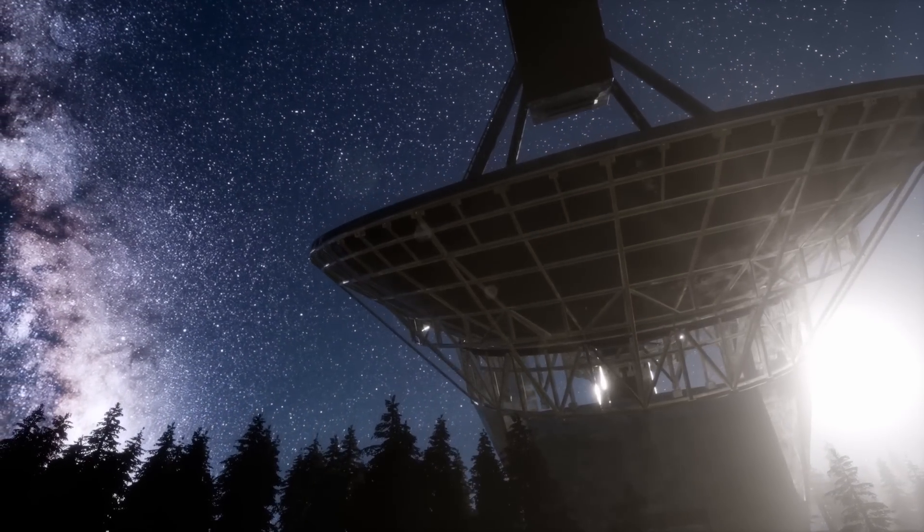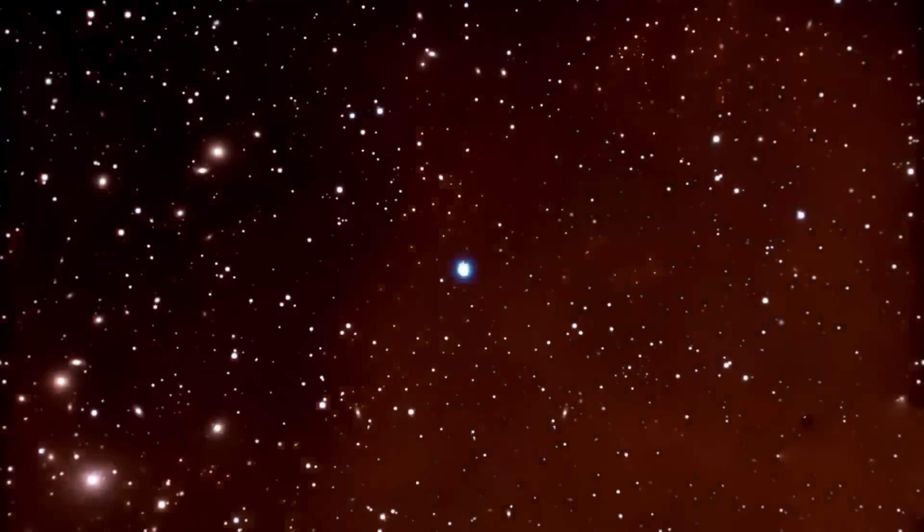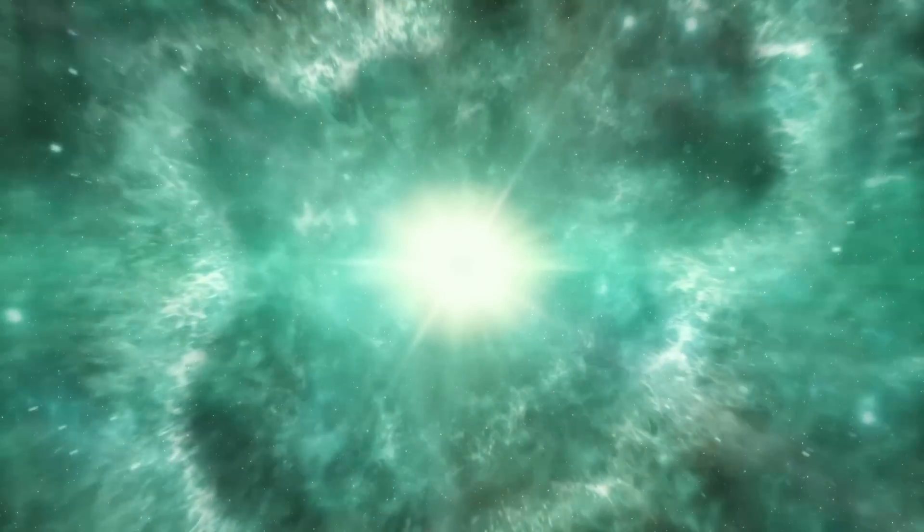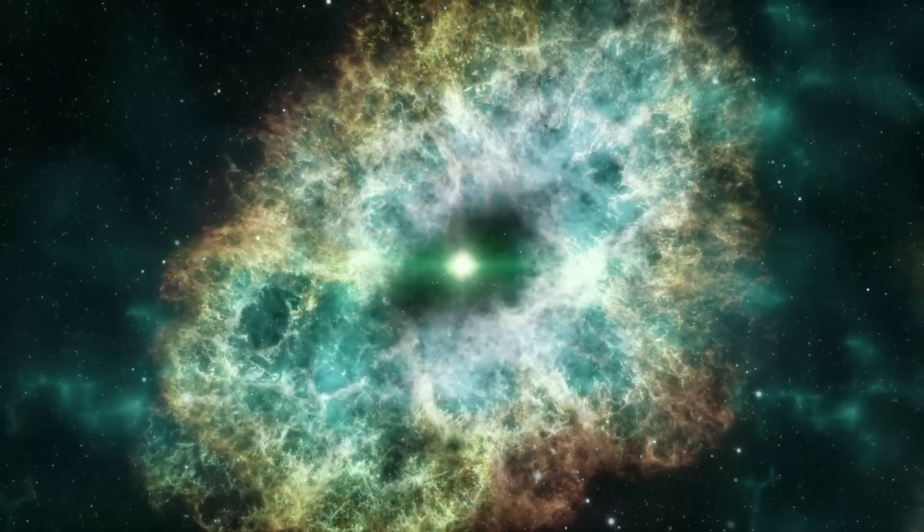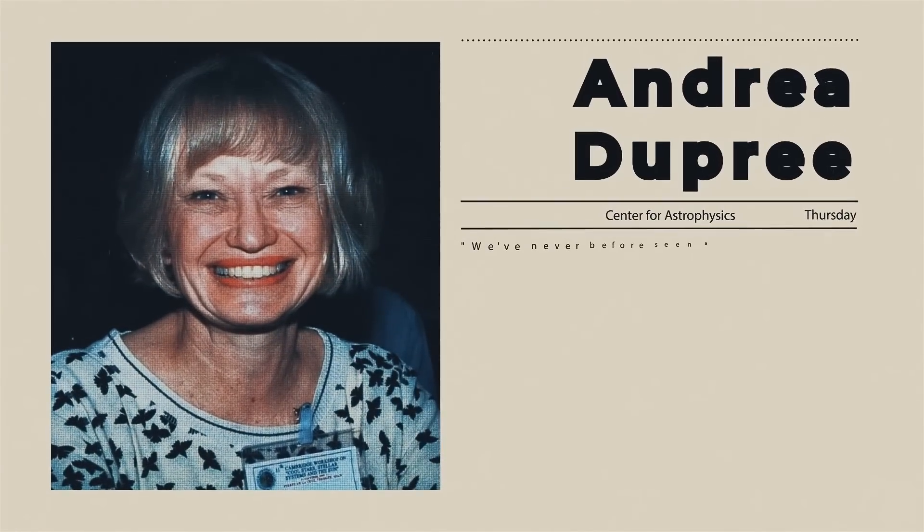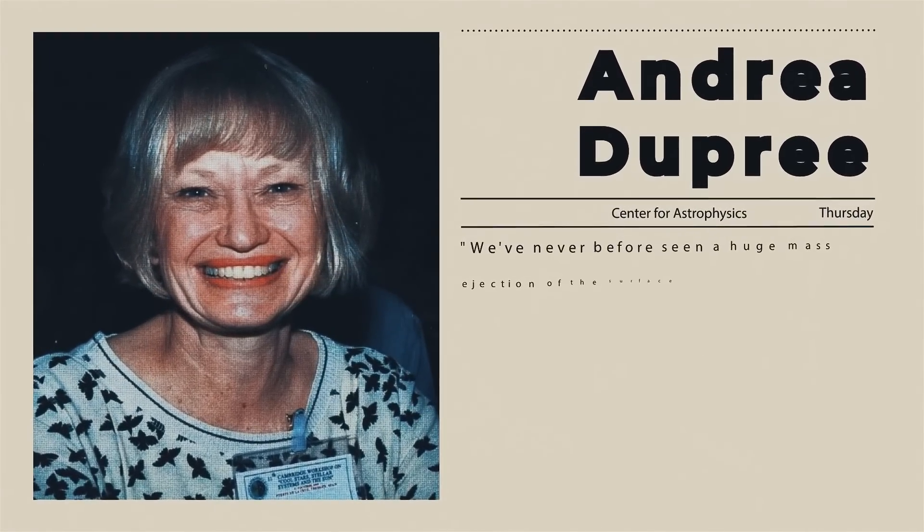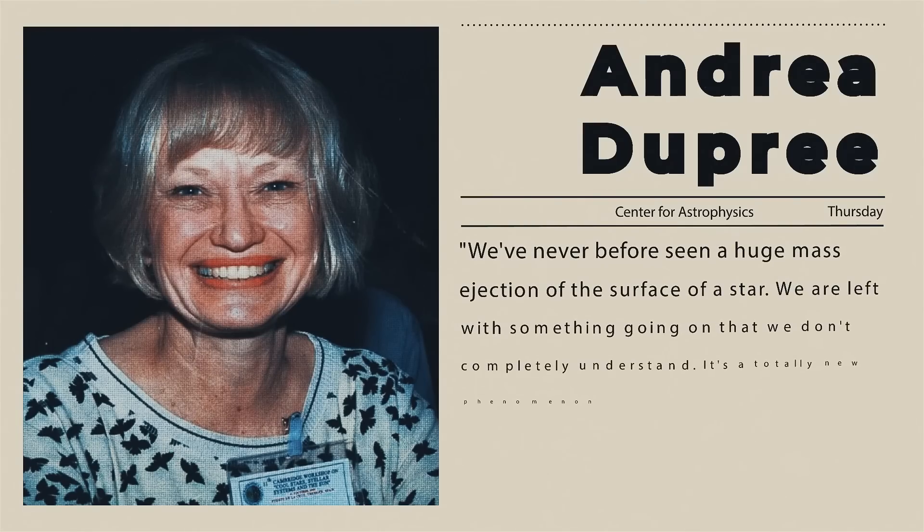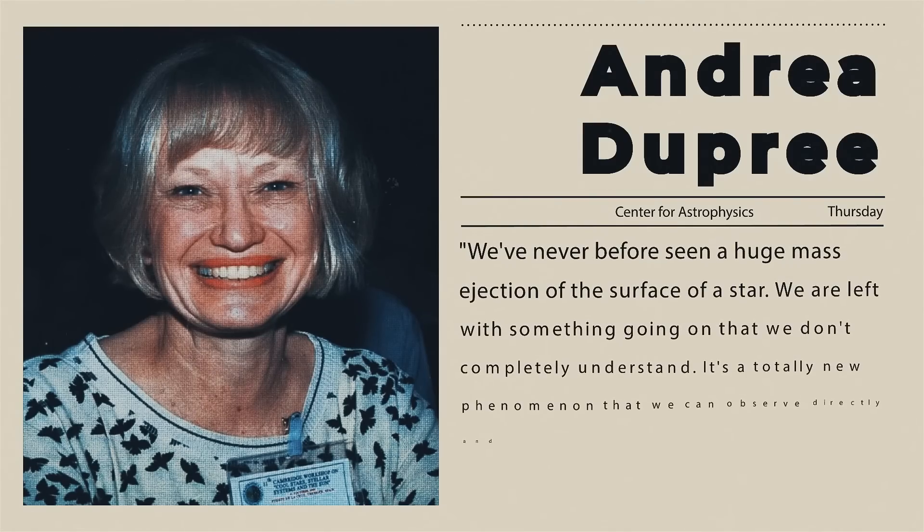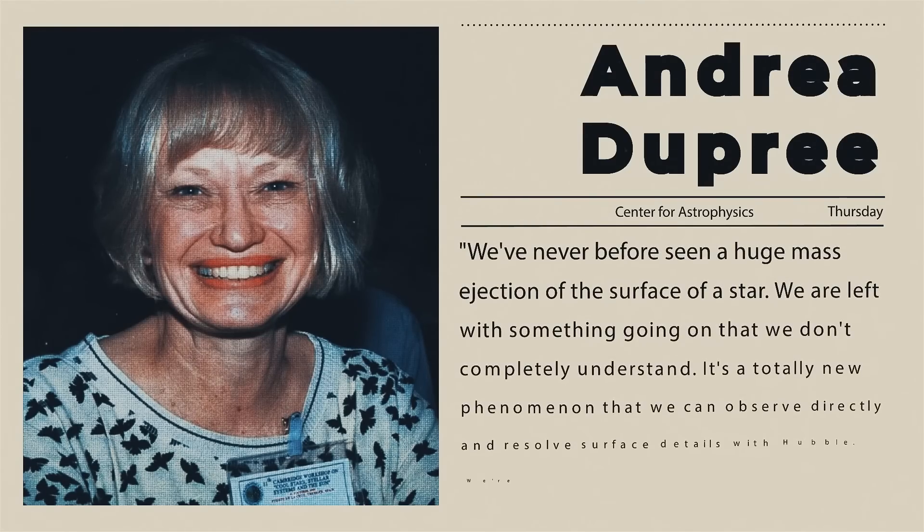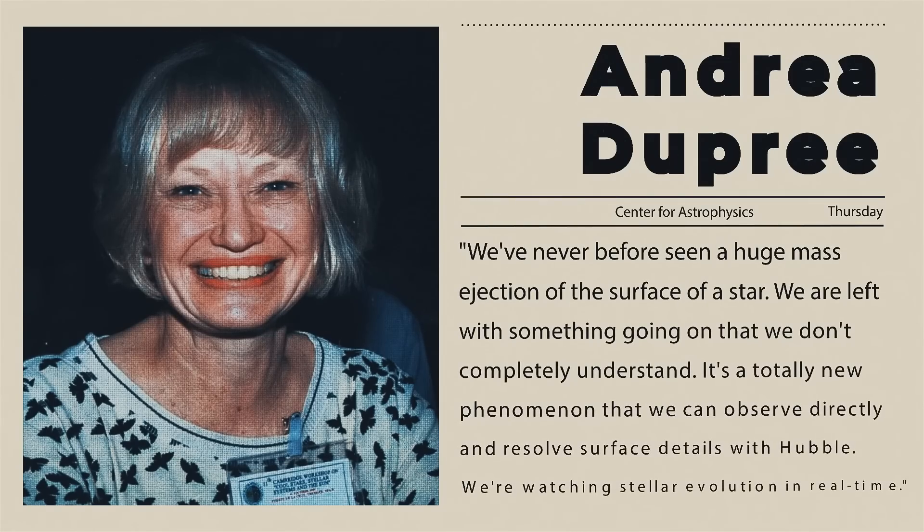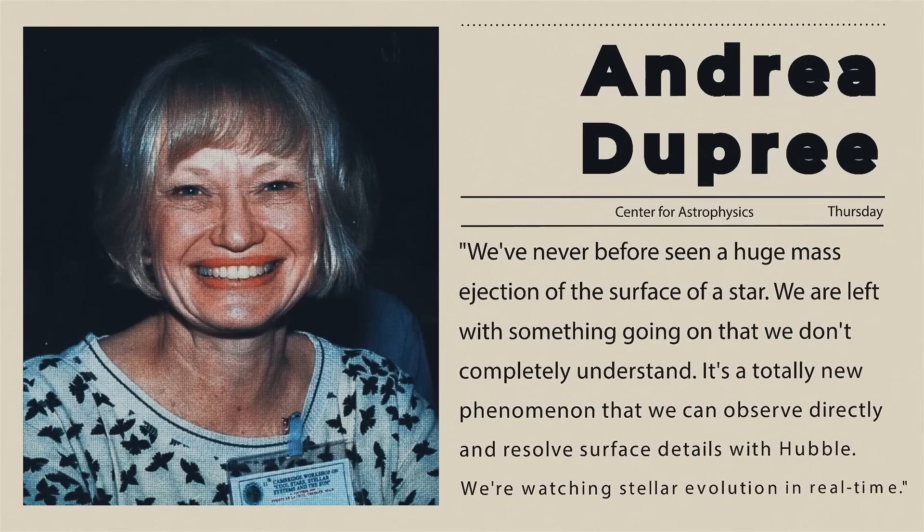Astronomers may gain a better understanding of how red stars lose mass in their last days before exploding in a bright supernova from Betelgeuse's explosion. As Dupree notes, we've never before seen a huge mass ejection on the surface of a star. We are left with something going on that we don't completely understand. It's a totally new phenomenon that we can observe directly and resolve surface details with Hubble. We're watching stellar evolution in real time.